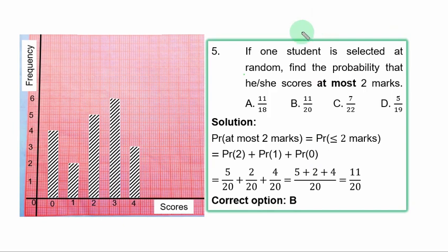Question 5. If one student is selected at random, find the probability that he or she scores at most 2 marks. At most 2 marks means 2 marks and below. That is less than or equal to 2. So, you have probability of those that scored 2 plus those that scored 1 plus those that scored 0. Those that scored 2, they are 5 over total students. Those that scored 1, they are 2 students over total. Then 4 students scored 0 over total. So, you have like fractions, you simply add the numerator and you have 11 over 20. B is the correct option.